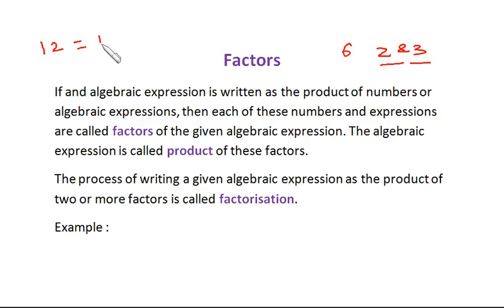Suppose we have any other number, maybe twelve. Twelve can be written as four into three, or maybe six into two. So four and three are factors of twelve. Similarly, six and two are factors of twelve, and twelve is product of four and three.